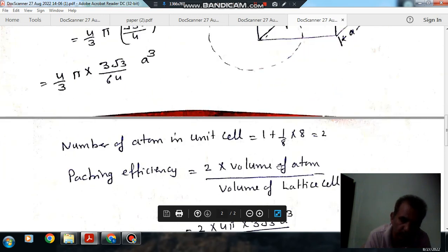Volume of atoms - volume occupied by the atoms is there are two atoms. So two into volume of single atom divided by the volume of the lattice cell is your packing efficiency.